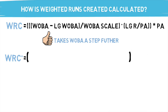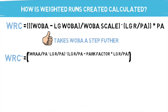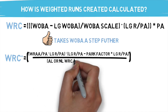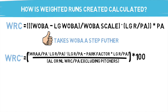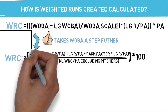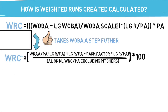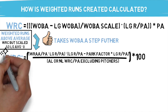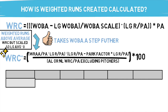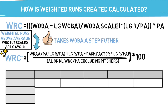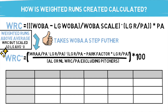The weighted runs created plus equation is a little more intense. It takes into account your park and league averages, and finally multiplies its output by 100 to move the league average number to 100. Above 100 is good, below is not so much. You may also notice that instead of wOBA, this equation is taking weighted runs above average into account. This is the same output as weighted runs created, but it is scaled so the league average is now instead zero. All in all, the best stat of the group is going to be weighted runs created plus — it's the most in-depth, while spitting out an easy-to-read figure. Above 100 is good, below is bad.